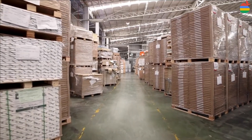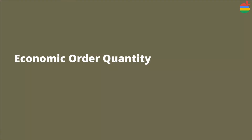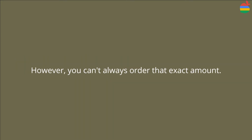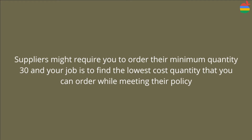When you calculate an economy order quantity, you identify how many items you should order to minimize order cost. However, you can't always order that exact amount — a supplier might require you to order their minimum quantity, let's say 30. Your job is to find the lowest cost quantity you can order while meeting your supplier policy. In this video I will show you how to do that.